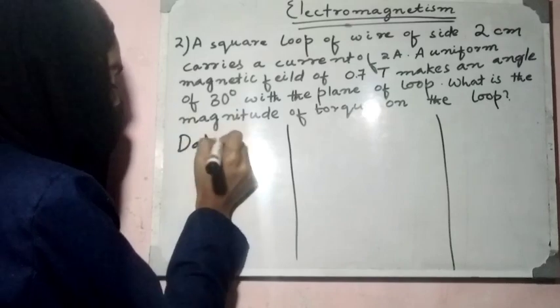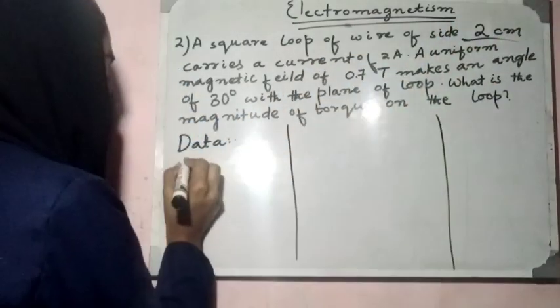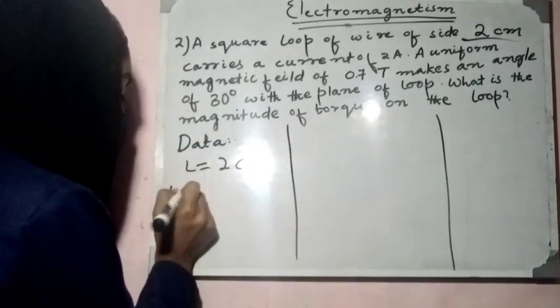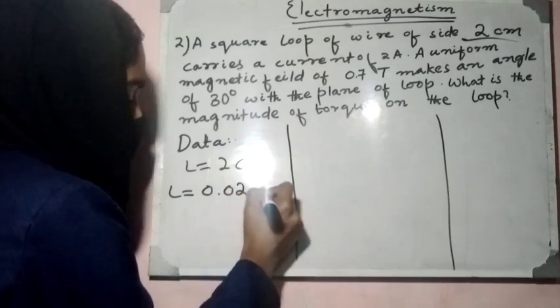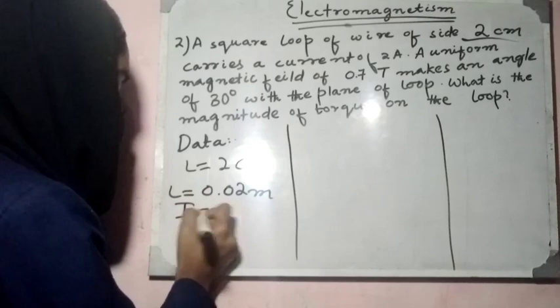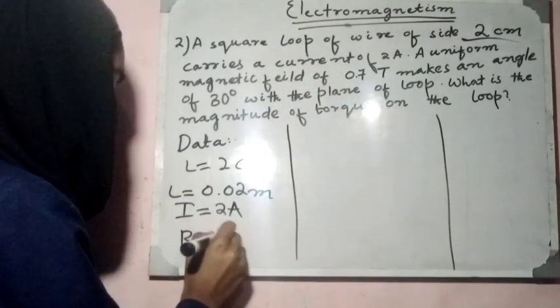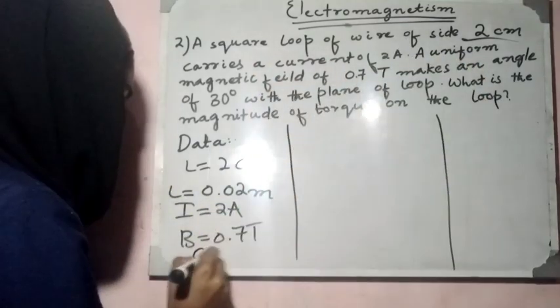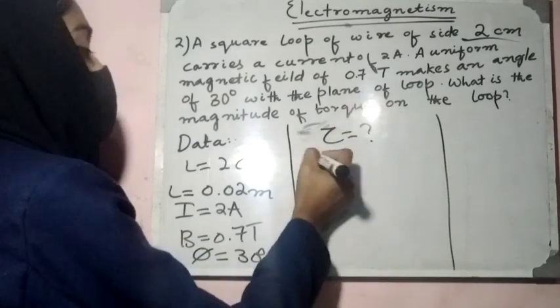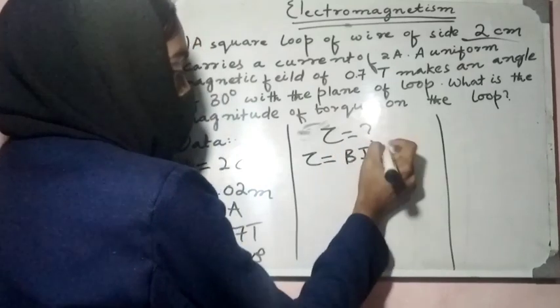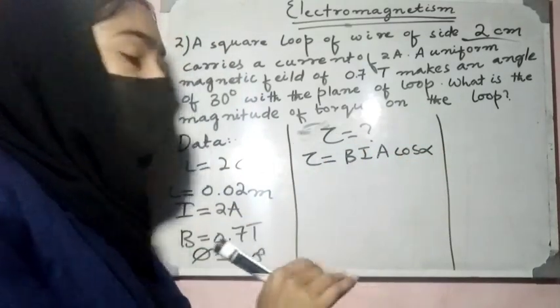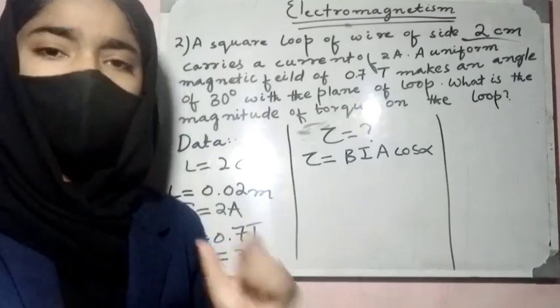The second problem is: A square loop of wire of size 2 cm carries a current of 2 ampere. A uniform magnetic field of 0.7 tesla makes an angle of 30 degrees with the plane of the loop. What is the magnitude of the torque on the loop? This is the problem which we have discussed in detail. If you haven't seen the torque on the previous video, we have studied the torque formula.